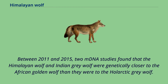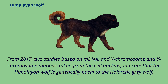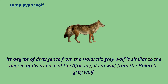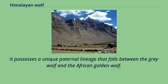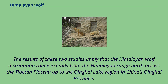From 2017, two studies based on mitochondrial DNA, an X chromosome and Y chromosome markers taken from the cell nucleus, indicate that the Himalayan wolf is genetically basal to the whole arctic gray wolf. Its degree of divergence from the whole arctic gray wolf is similar to the degree of divergence of the African golden wolf from the whole arctic gray wolf. The Himalayan wolf shares a maternal lineage with the African golden wolf and possesses a unique paternal lineage that falls between the gray wolf and the African golden wolf. The results of these two studies imply that the Himalayan wolf distribution range extends from the Himalayan range north across the Tibetan plateau up to the Qinghai Lake region in China's Qinghai province.